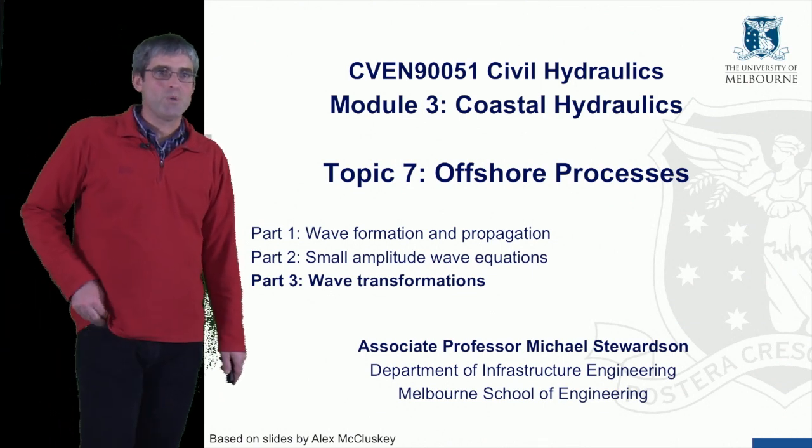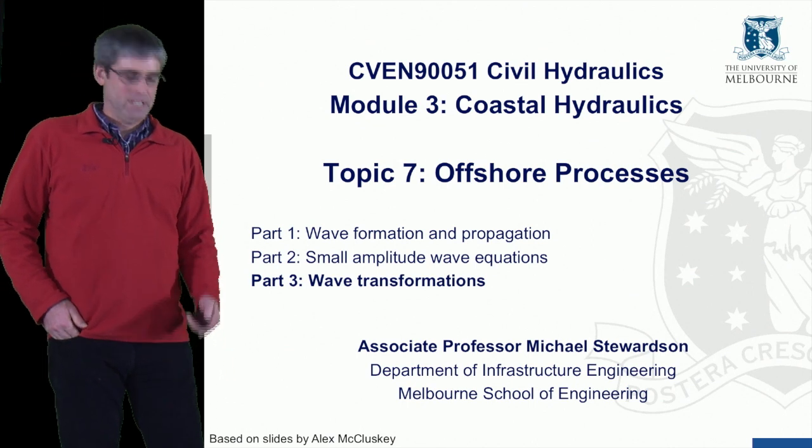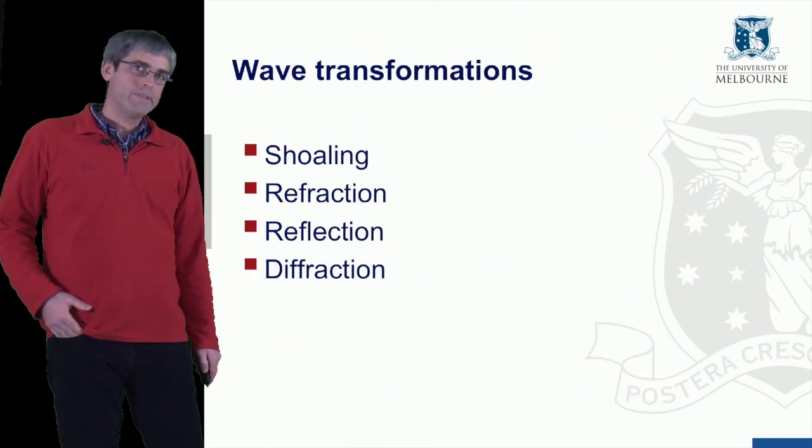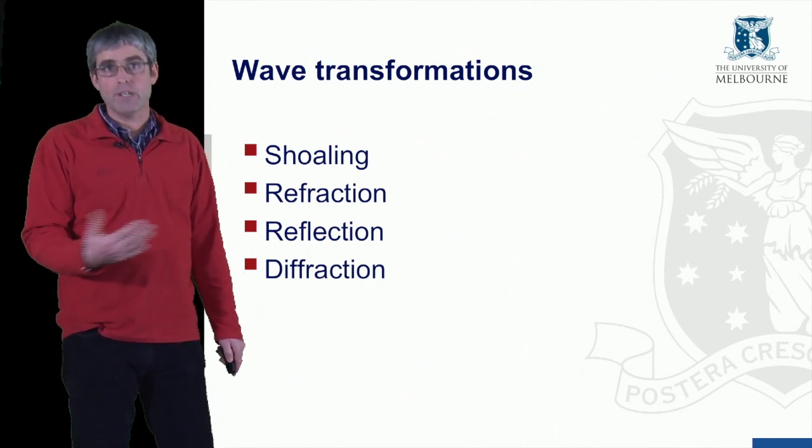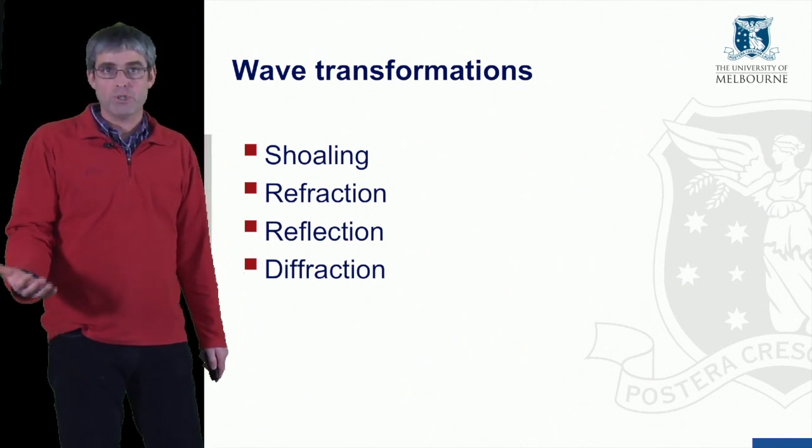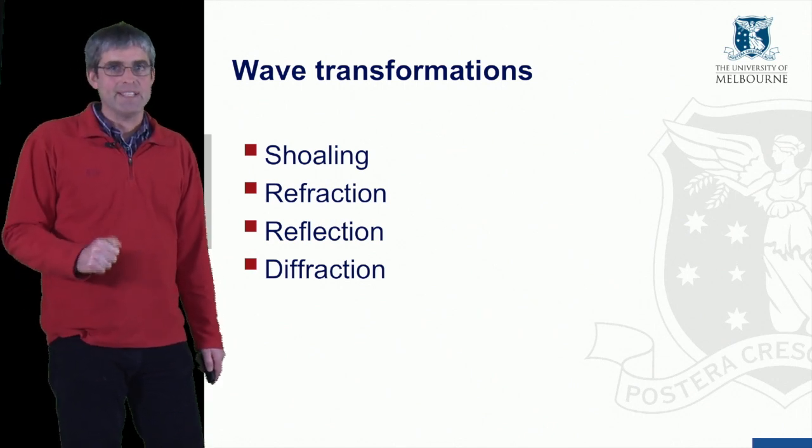This is the third part of the offshore processes topic on wave transformations. We're going to talk about four different kinds of transformation as waves enter the shallow zone: shoaling, refraction, reflection, and diffraction.